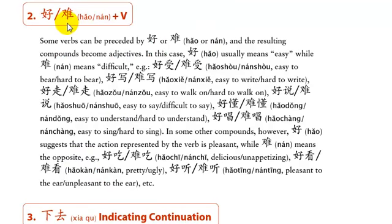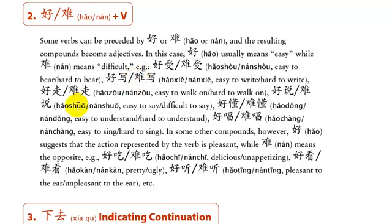Next we have the use of 好 and 难. In this dialogue, 高文中 was talking about running in the cold weather and the hot weather and said it was 难受 — 受 means to bear or endure, so 难受 means difficult to bear. Here we're looking at 好 and 难 together with verbs or adjectives. 好 usually means easy, and 难 means difficult. So 好受 is easy to bear, 难受 is difficult to bear; 好写 is easy to write, 难写 is difficult to write.